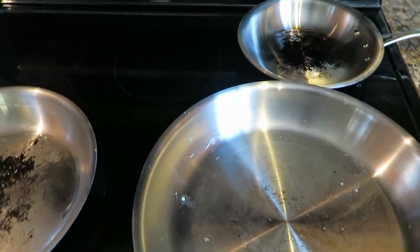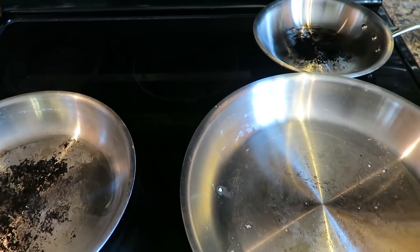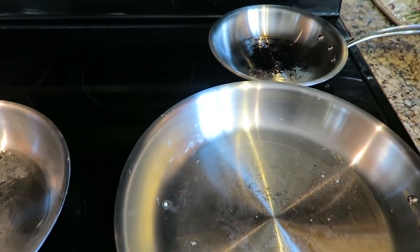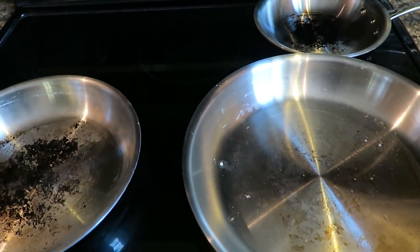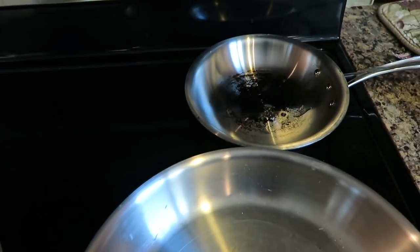All right, so here are the three pans with burnt bottoms thanks to my husband's cooking. I'm gonna try three different methods to get the stains and the burnt parts off. There's a method where you put baking soda, vinegar, and water and then you boil it.